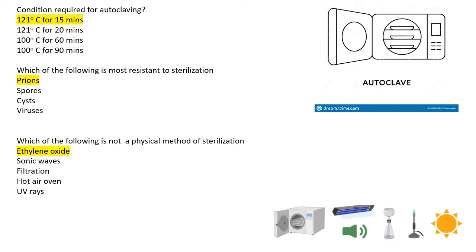Next: the conditions required for autoclaving. Proper autoclaving is performed at 121 degrees Celsius for 15 minutes. The correct option is 15 minutes.